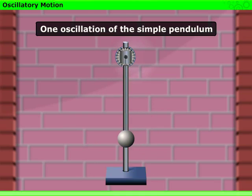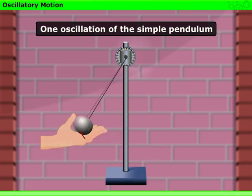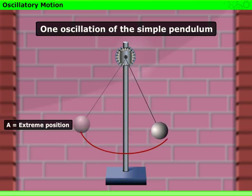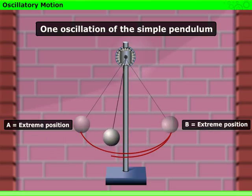One oscillation in other words can also be when the bob of a simple pendulum moves from one extreme position, say A, to the other extreme position, say B, and comes back to A.